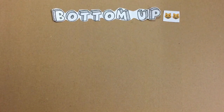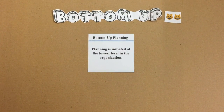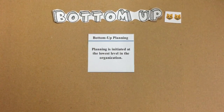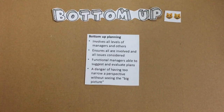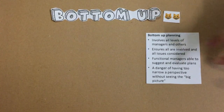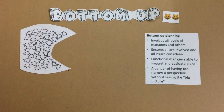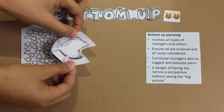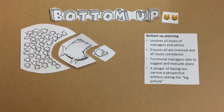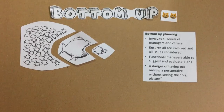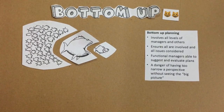Now we go on to the details of bottom-up management. In bottom-up planning, planning is initiated at the lowest level of the organization, usually by employees. It involves all levels of managers and other workers. This ensures that all are involved and all issues are considered before a decision is taken. Functional managers are able to suggest and evaluate plans from employees before passing them up to higher managers. However, there is also a danger in bottom-up planning: having too narrow a perspective without seeing the big picture.